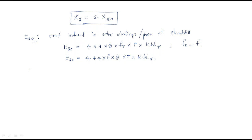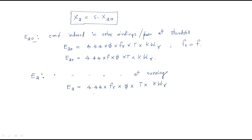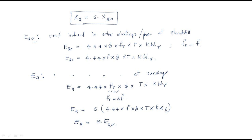E2 is the EMF induced in rotor windings per phase at running condition. We write E2 = 4.44·fᵣ·Φ·N₂·Kwr. Since fᵣ = s·f, substituting gives E2 = 4.44·s·f·Φ·N₂·Kwr = s·E2₀. Therefore: E2 = s·E2₀.